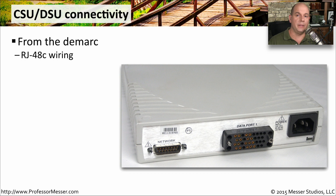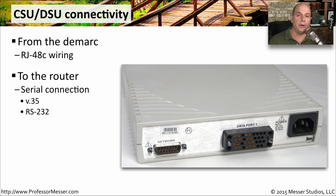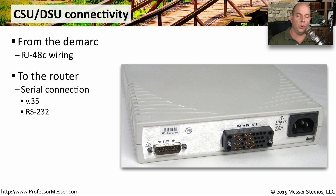The wide area connection from the demarc is usually an RJ45-looking connector, but it's wired a little differently than Ethernet, so you may see it referred to as an RJ48C. From the CSU/DSU to the router is usually a serial connection — it may use one of the large square V.35 connectors, or it might be a nine-pin or 25-pin serial cable connection called RS232. Sometimes the CSU/DSU will have jacks that you can connect to with a special monitor jack cable, then connect to a protocol analyzer to see exactly what's happening across the WAN.